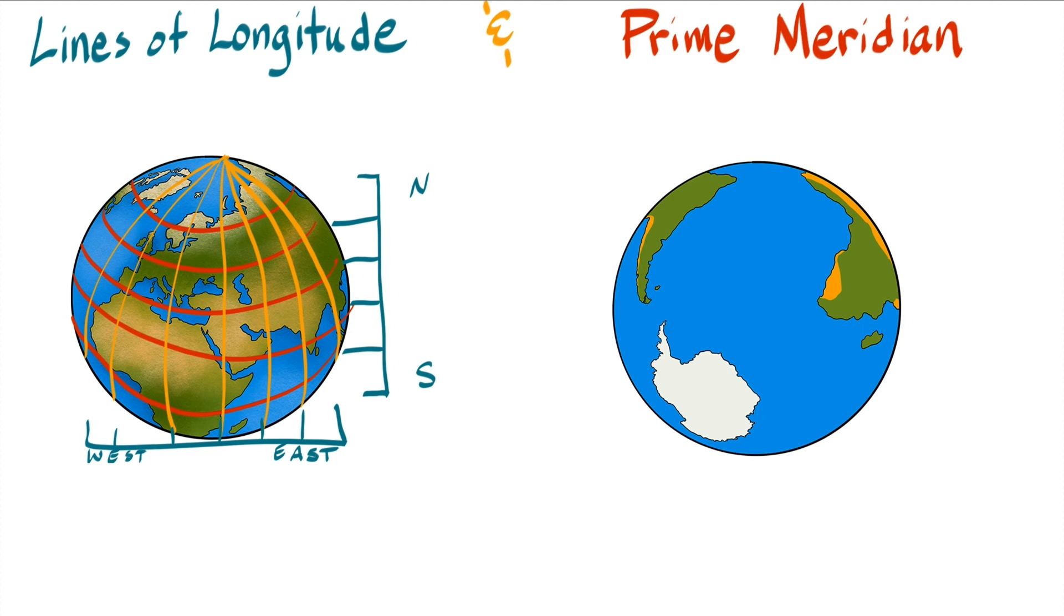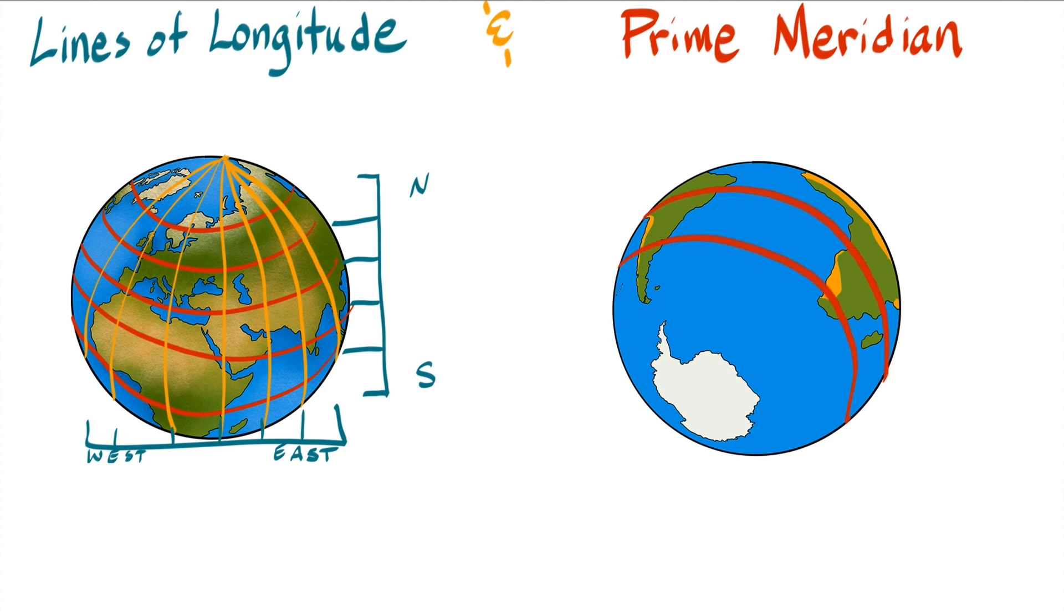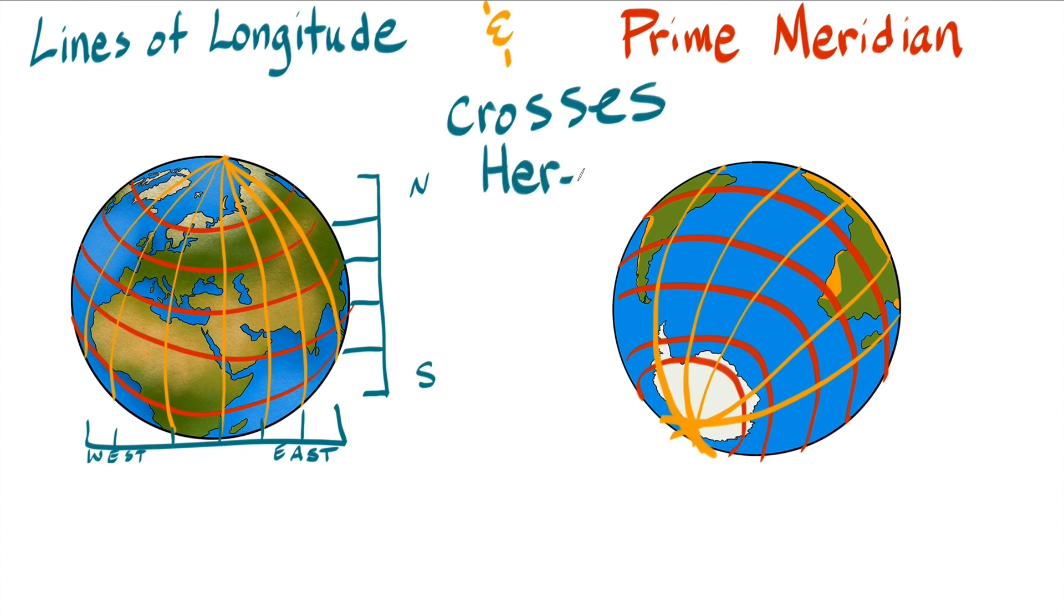One other major difference between meridians and parallels is that while lines of latitude never cross each other's path, lines of longitude do. Every meridian crosses at the axis twice, once at the North Pole and once at the South Pole.